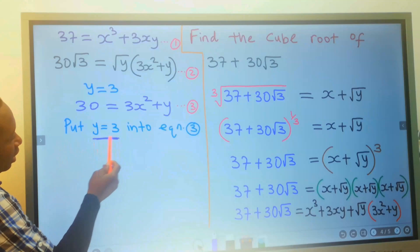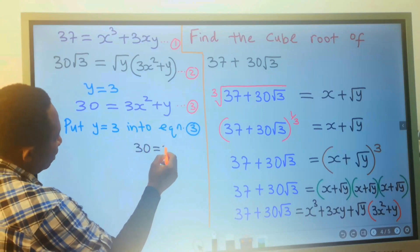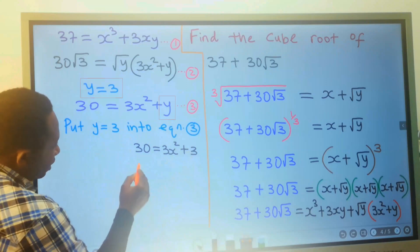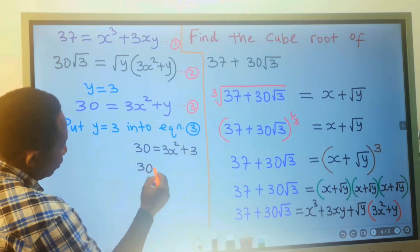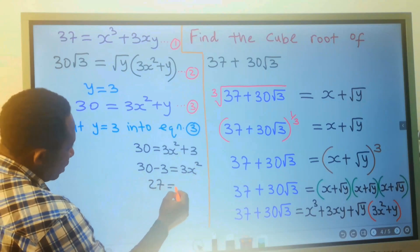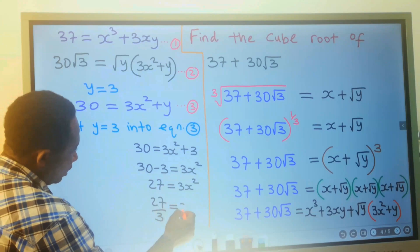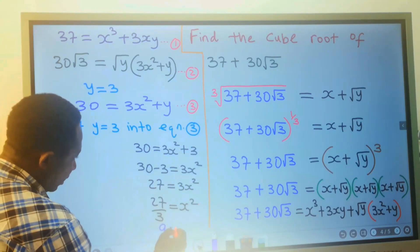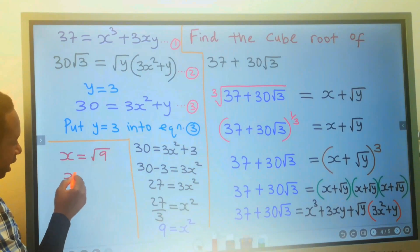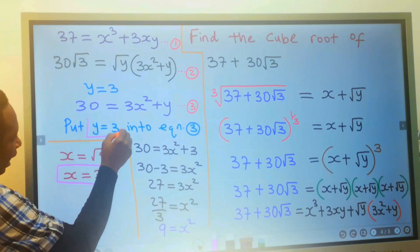I will put y equal to 3 into equation 3 to get x. That is: 30 equals 3x squared plus 3. Moving 3 across gives 27 equals 3x squared. Dividing both sides by 3 gives x squared equals 9. So x equals the square root of 9, which is 3. We obtained x equals 3 and y equals 3.